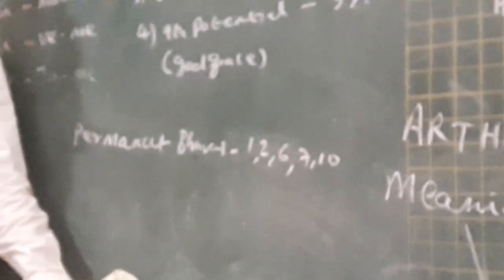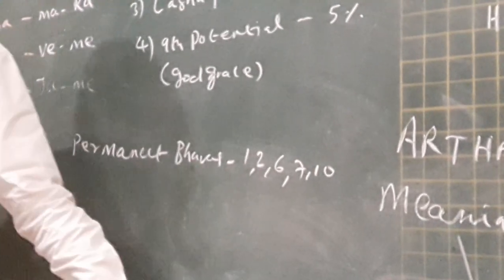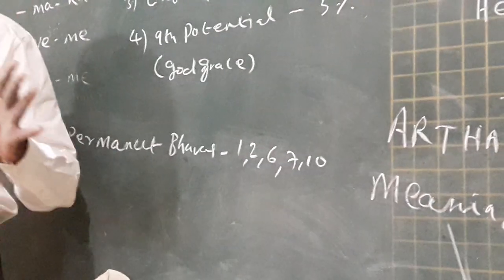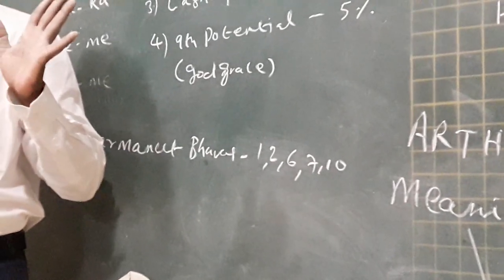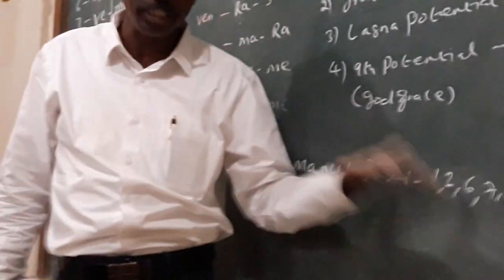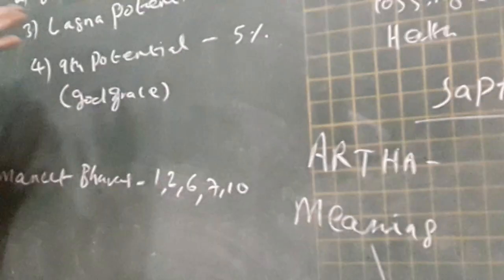This is called permanent bhava. Permanent bhava means this bhava potential should not damage. Because for all the 12 bhava, this bhava is very important bhava.